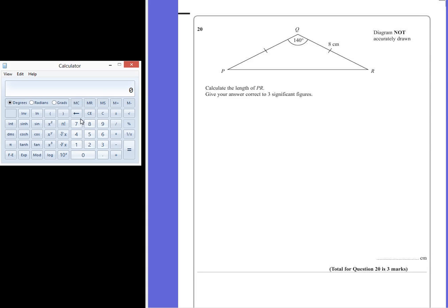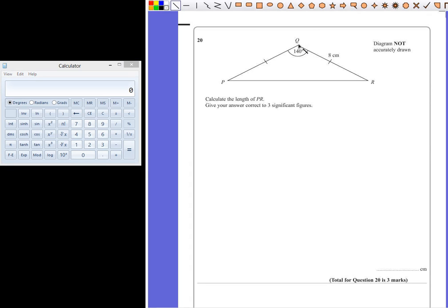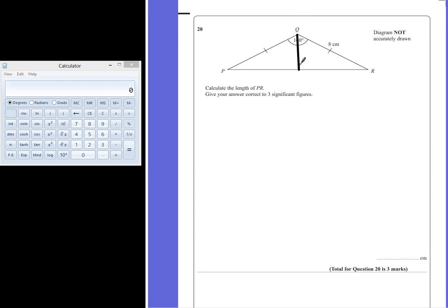So, PQR is an isosceles triangle. We know that because this little dash on the two lines tells us that the lines are equal. The thing about isosceles triangles is that they are completely symmetrical. So if we drew a line straight down the middle, we are left with two right angle triangles.